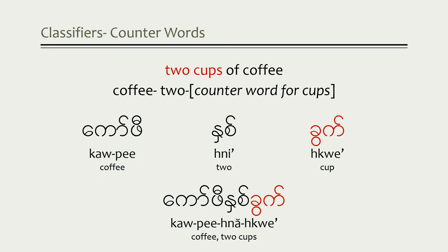Just a note: in English, if you were ordering coffee, you could say 'two coffees'. But that doesn't work in Myanmar — you have to use this counter word with it. I hope that seems fairly easy. If it is, let me complicate it a little bit.